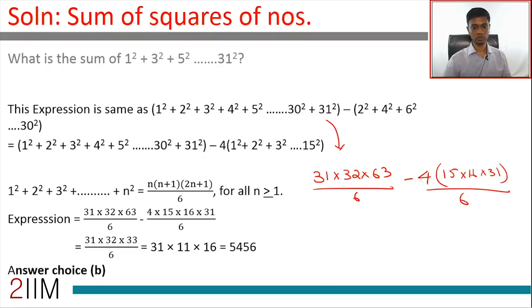n(n+1)(2n+1)/6: in the first case n is 31, second case n is 15, but there's a 4 times available outside because we're taking 2² out of the picture. How do we simplify this? We can take out 31/6 outside.